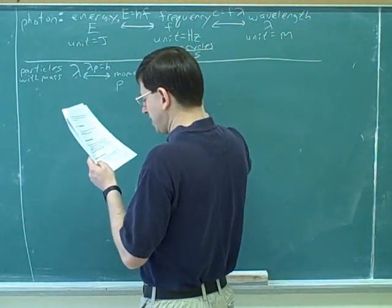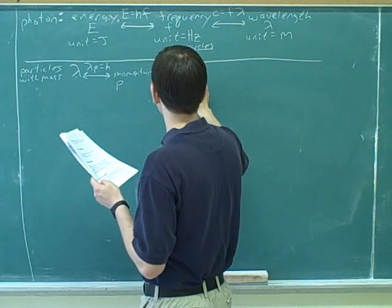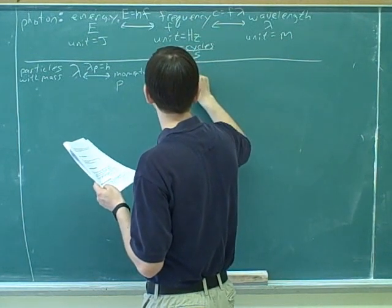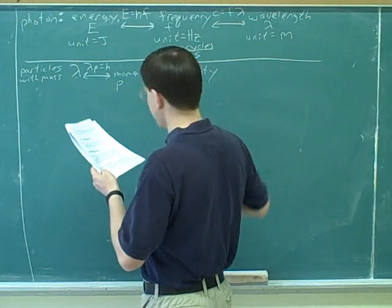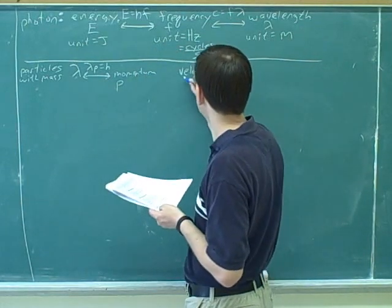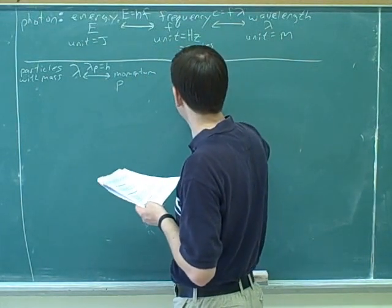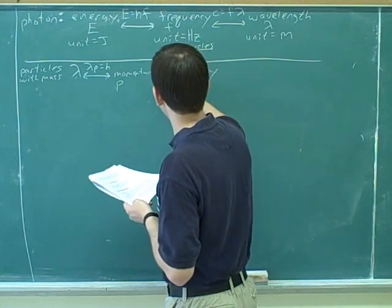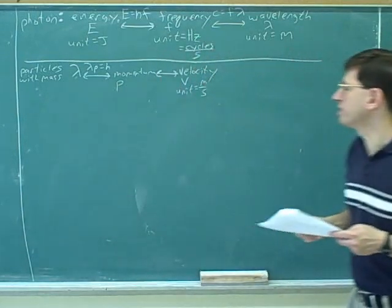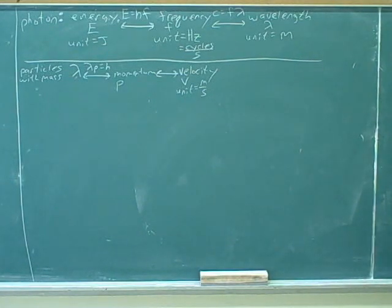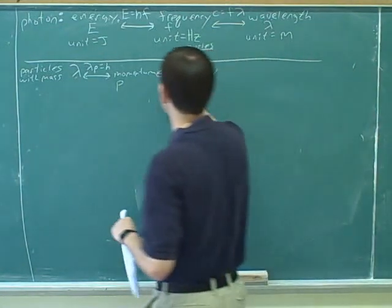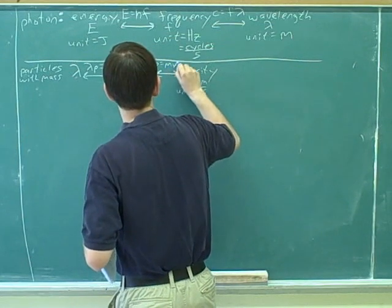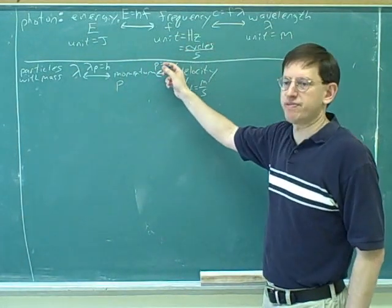Alright, now if we know the momentum, it would be nice if we could find the speed or velocity. What's our symbol for velocity? V. And what's the unit for that? Meters per second. Do you remember what's the relationship between momentum and velocity? M times V. Yeah, that's just the definition of momentum. So it's good that you remember that. The momentum equals M times V.